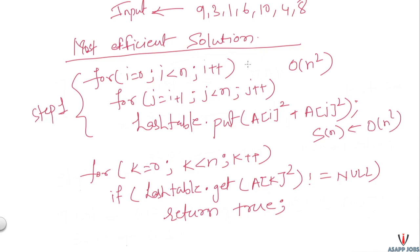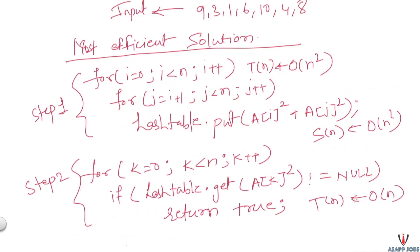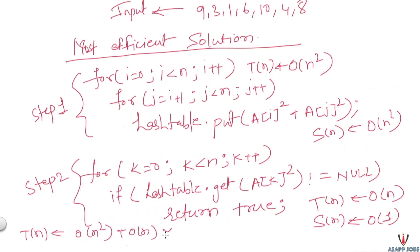In the second step of this alternative approach, we scan the entire array once and look up a[k]² in the hash table. Getting any value from the hash table takes constant time, so the time complexity of this step is O(n) and space complexity is O(1). The total time complexity is O(n²) from step 1 plus O(n) from step 2, which equals O(n²), and total space complexity is O(n²).